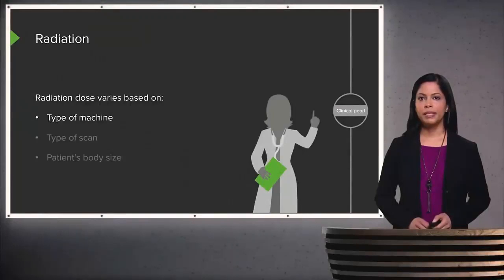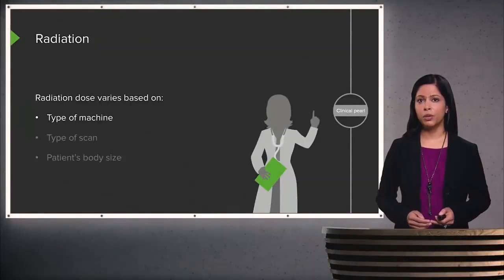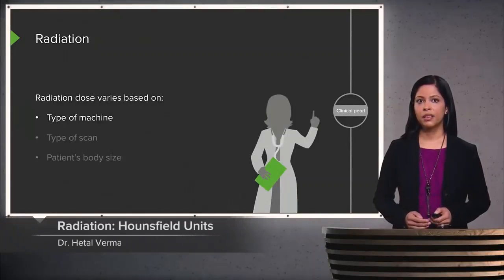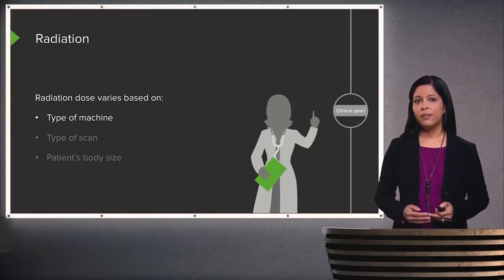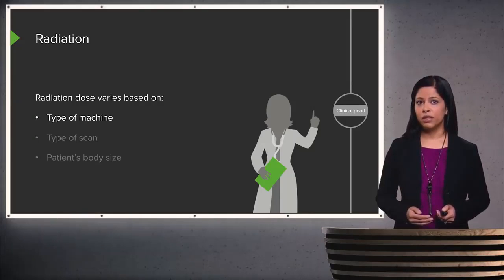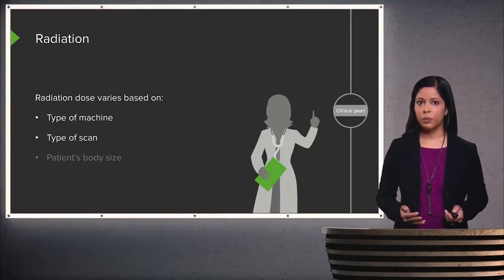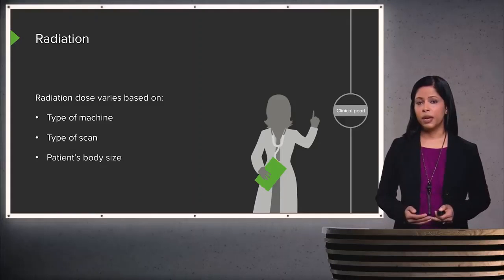Let's review some common CT techniques and discuss how these techniques can be manipulated to help you identify abnormalities. Radiation is administered during a CT scan, and it varies depending on the type of machine that's used, the type of scan that's being performed, and the patient's body size.